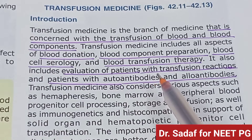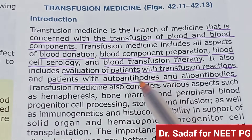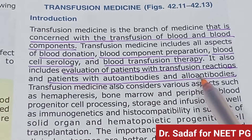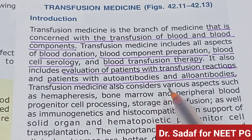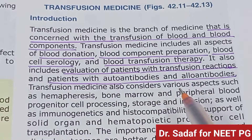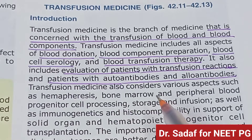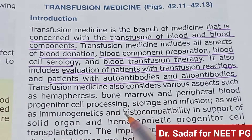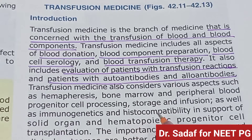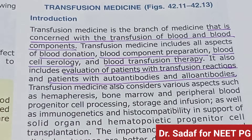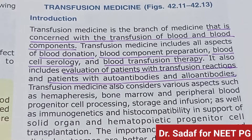Transfusion medicine also includes evaluation of the patient with transfusion reaction, or patients with autoantibodies and alloantibodies. It also contains various aspects such as hemapheresis, bone marrow and peripheral blood progenitor cell processing, storage, infusion, as well as immunogenetics and histocompatibility in support of solid organ and hemopoietic progenitor cell transplantation.